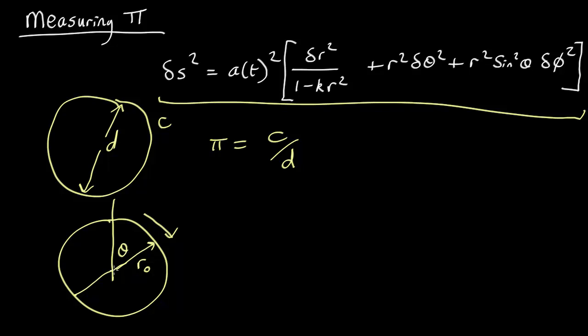So let's start with the circumference. We can break that up into bits corresponding to a small change delta theta in the angle. So this will be a small length here delta s. And what's delta s in this case? Well delta s squared is going to be a of t squared. Now in this case we're just changing theta. We're not changing anything else.